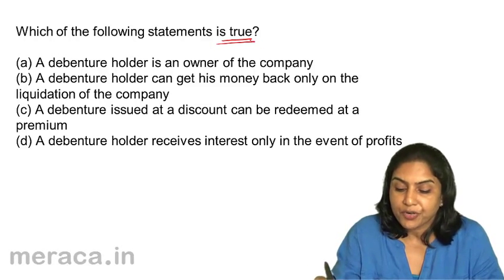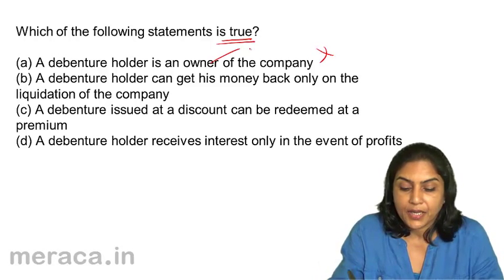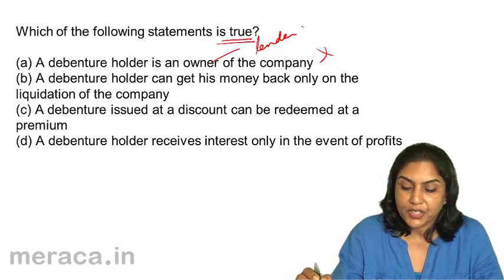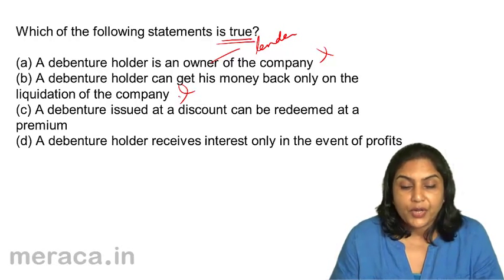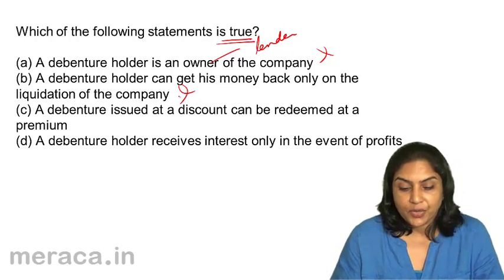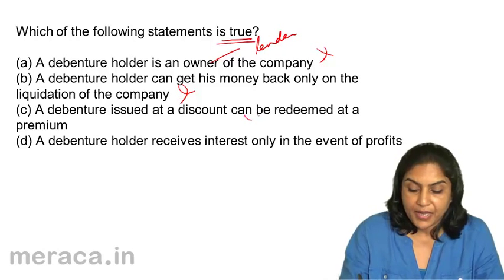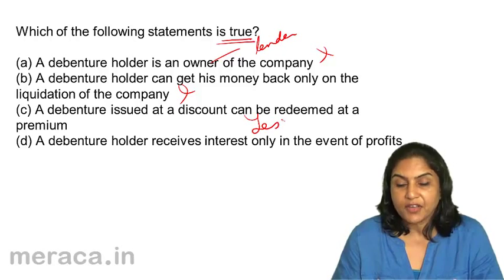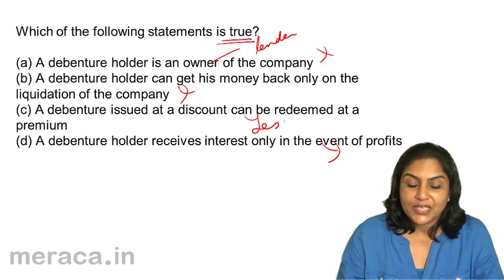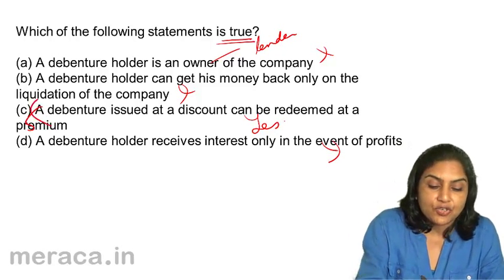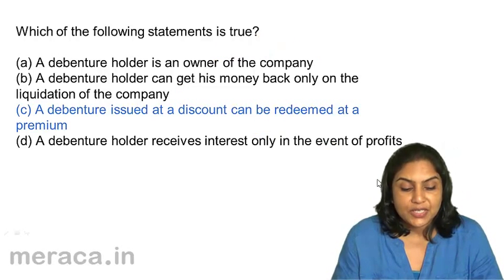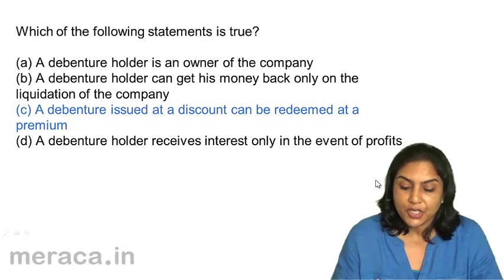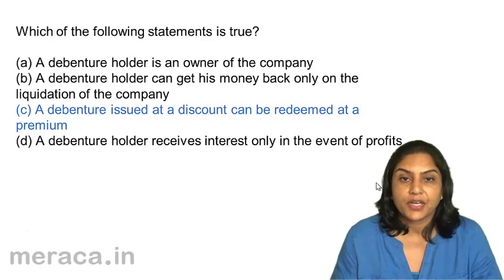Is a debenture holder an owner of the company? No, it is a lender of the company. Can a debenture holder get his money back only on liquidation? That is not true — an equity shareholder gets it only on liquidation. A debenture issued at a discount can be redeemed at a premium — yes, it can be, the statement is true. A debenture holder receives interest only in the event of profits — that is not true. Therefore, the correct answer is C.